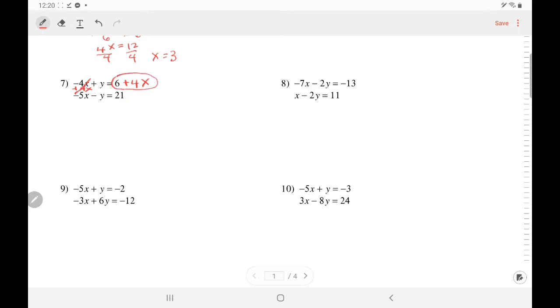Substitute that into y of the other equation. So negative 5x minus, be really careful here with a parenthesis. 6 plus 4x equals 21. There is an invisible 1 here, which you will distribute. So negative 5x, minding its own business. Distribute your negative 1.